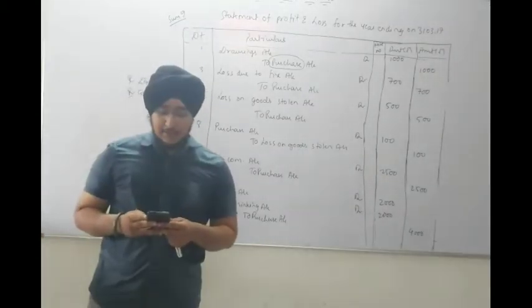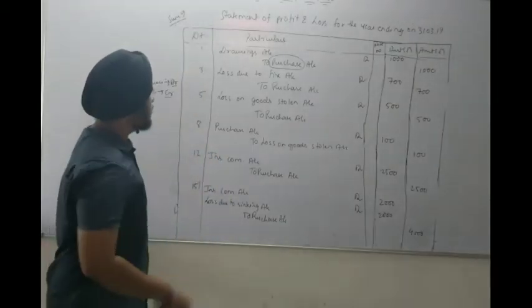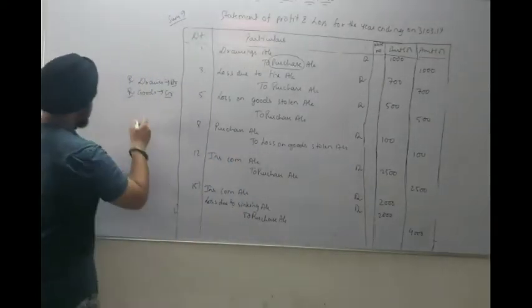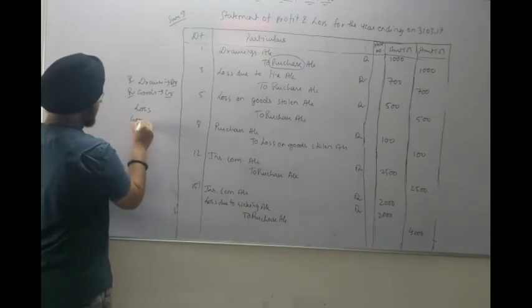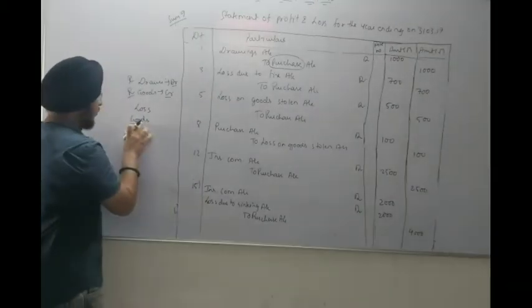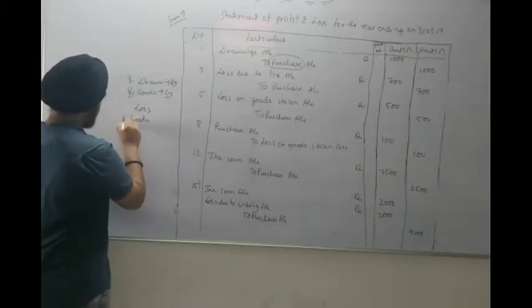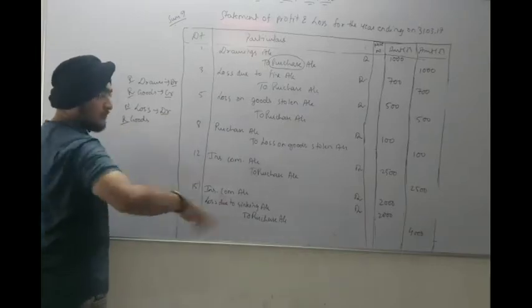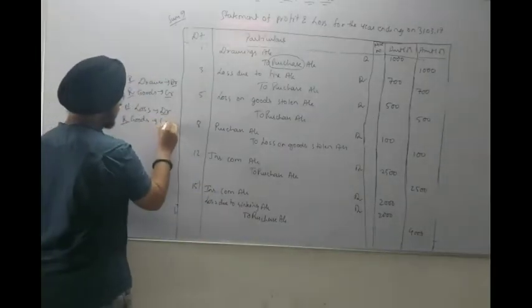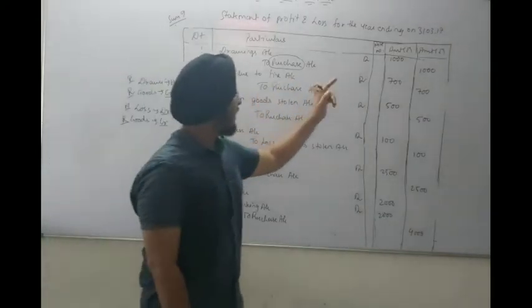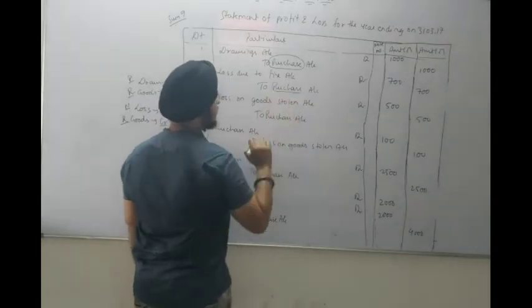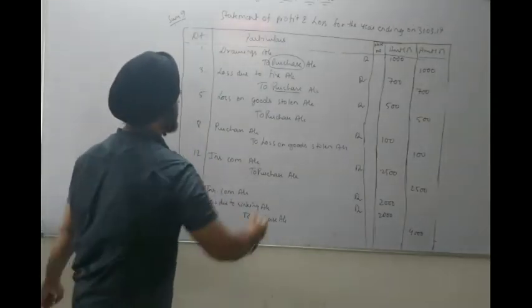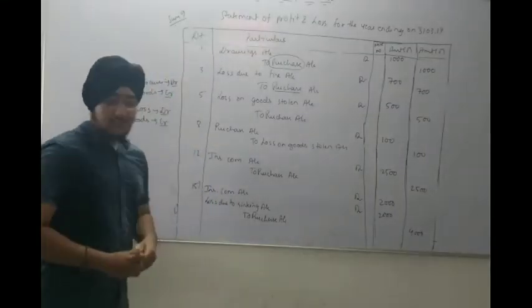Next transaction: Goods of Rs.700 destroyed by fire; it was not insured. Two things are involved — Loss (nominal account) and Goods (real account). Loss is debited, and since goods go out, goods account is credited. Journal entry: Loss due to fire account debit 700 to Purchase account. Whenever goods go out in ways other than sales, we write Purchase account.